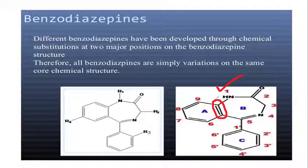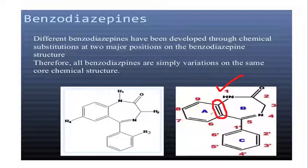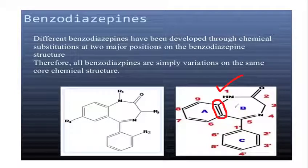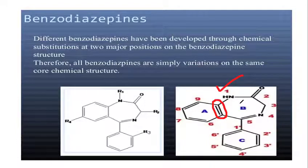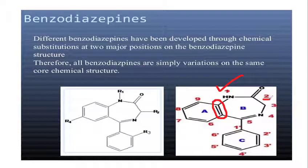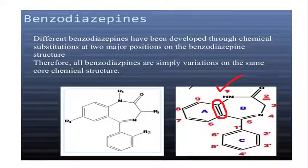When Ring A (benzene) and Ring B (diazepine) are joined, that is what makes the drug. If we separate benzene from diazepines, Ring A has benzene properties and Ring B has diazepine properties separately. Labeling starts from position 1, then position 2 has the carbonyl group, position 3, 4, 5, 6, 7, and 8. Ring C is labeled independently.